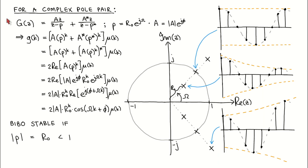Let's now look at the contribution of a complex pole pair to the impulse response. Suppose our system only has one complex pole pair. Then we can use partial fraction expansion to write it in this form. Since the pole P and residual A are complex numbers, we can write them in terms of their magnitudes and angles.